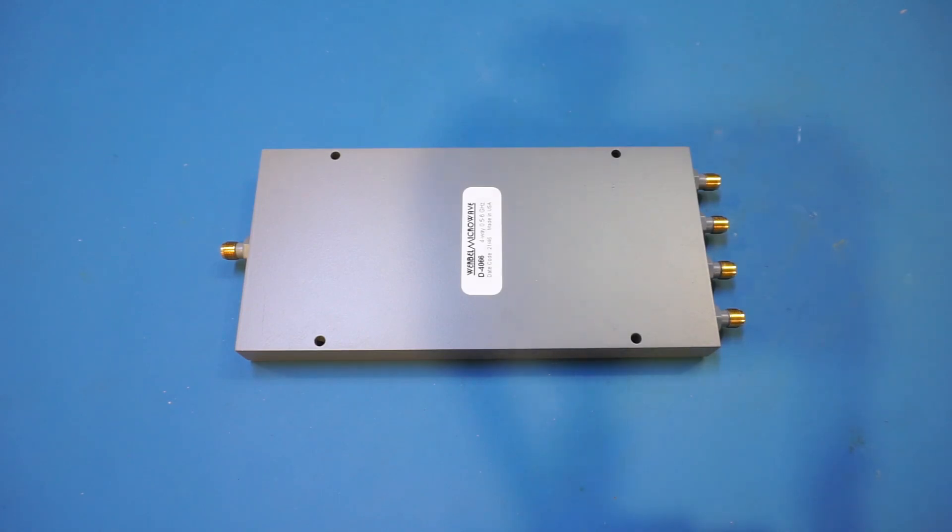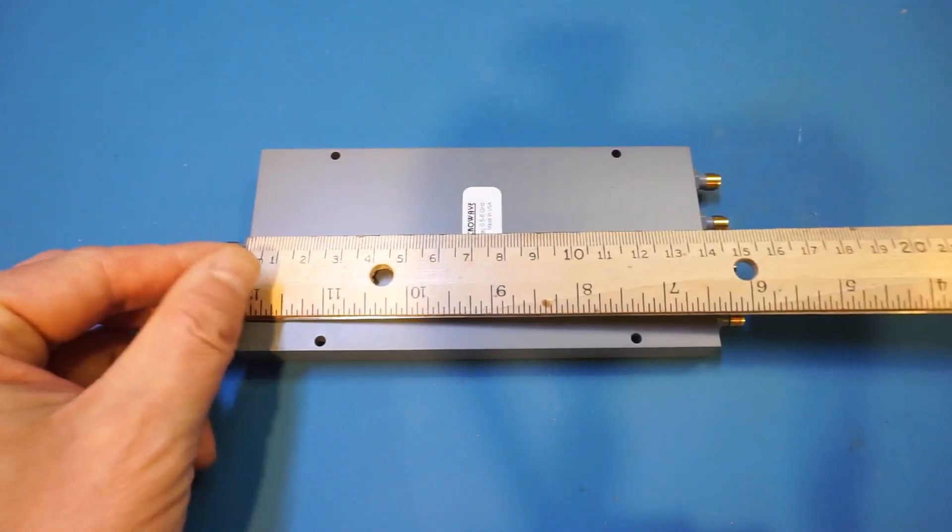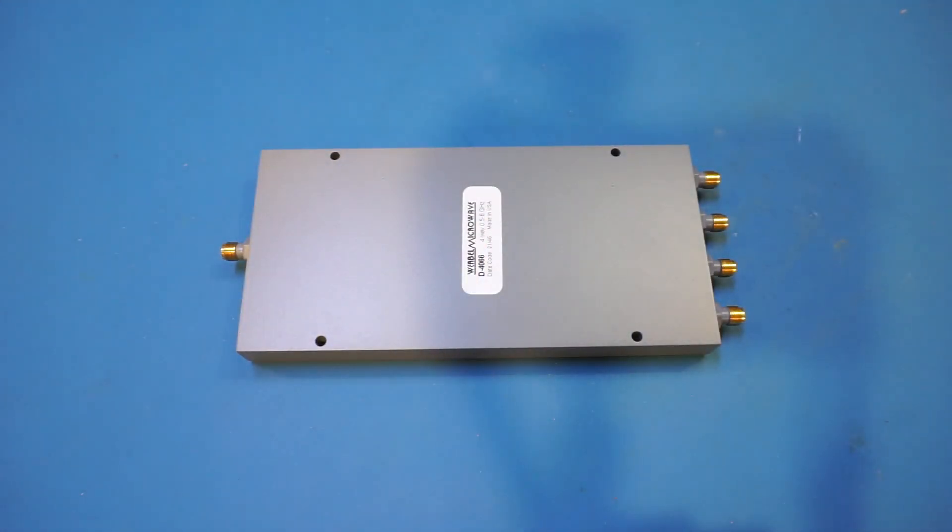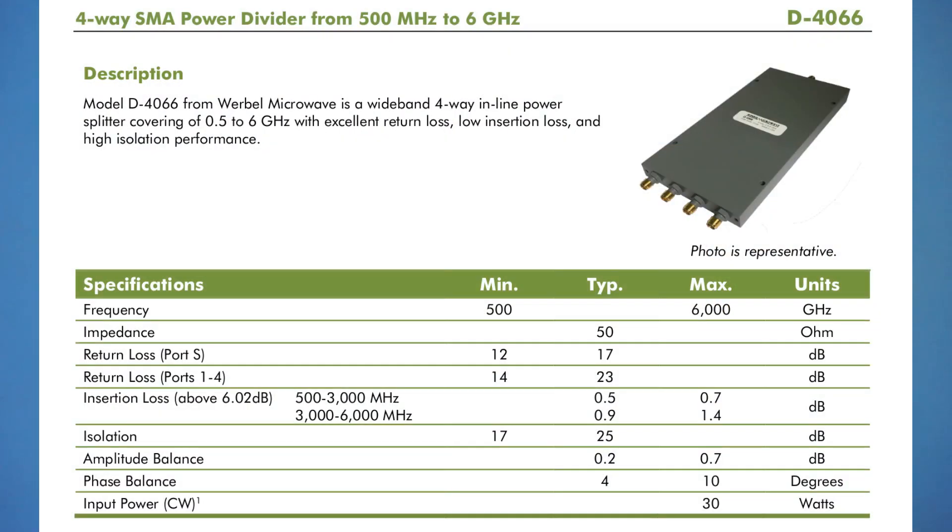Now just by looking at it, given the size of this device, we can definitely tell this is obviously a Wilkinson divider, as a resistive divider is much more compact. And of course we can also confirm it with specifications. The minimum frequency you can see here is 500 megahertz, which is typical for a Wilkinson divider given the physical constraints of the quarter wavelength transmission line dimensions. And the maximum frequency is 6 gigahertz for this device. The bandwidth is actually very wide.